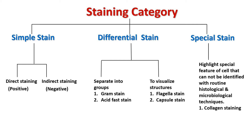Differential stain is categorized in two groups. Group 1 separates microorganisms into two different groups — for example, Gram staining differentiates between Gram positive and Gram negative bacteria, and acid-fast stain differentiates between acid-fast and non-acid-fast bacteria. Group 2 helps to visualize the structure of bacteria like flagella and capsule. The third category, special staining, highlights spatial features of cells that cannot be identified with routine histological and microbiological techniques.